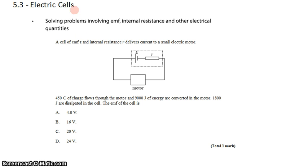In total, 450 coulombs of charge flows into the motor. As a result, 9,000 joules are delivered to the motor. But as a consequence of the internal resistance, 1,800 joules are dissipated in the cell.